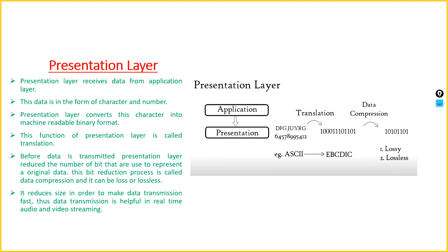Let's move to the presentation layer. The presentation layer receives data from the application layer in the form of characters and numbers. It then converts those characters and numbers into a machine-readable binary format — zeros and ones. This first function of the presentation layer is called translation.